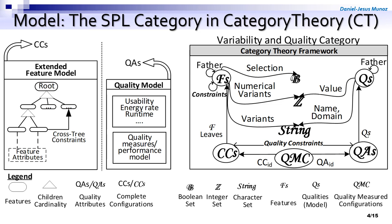Why did we apply category theory? Because there is a disconnection between the extended feature models — whatever extension we are talking about — and the quality model. The quality model is the one modeling variant-wise quality attributes, like for example energy rate and time.